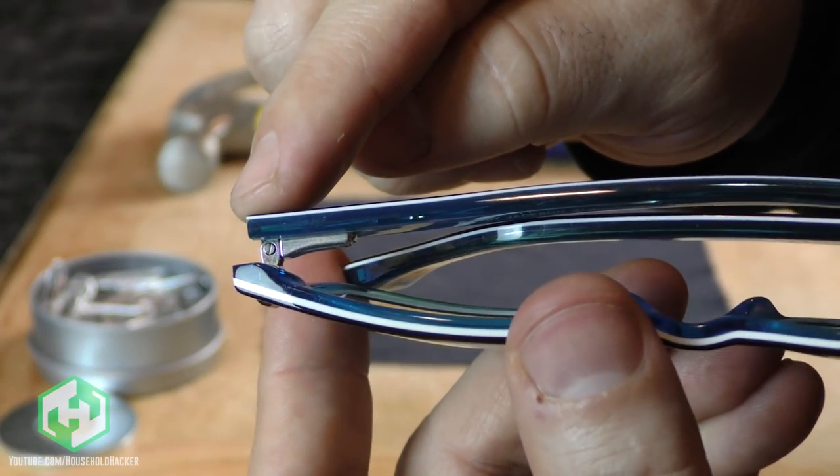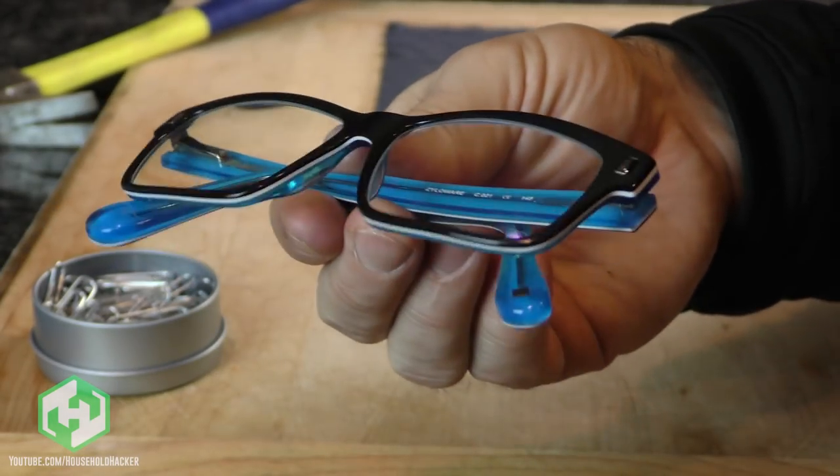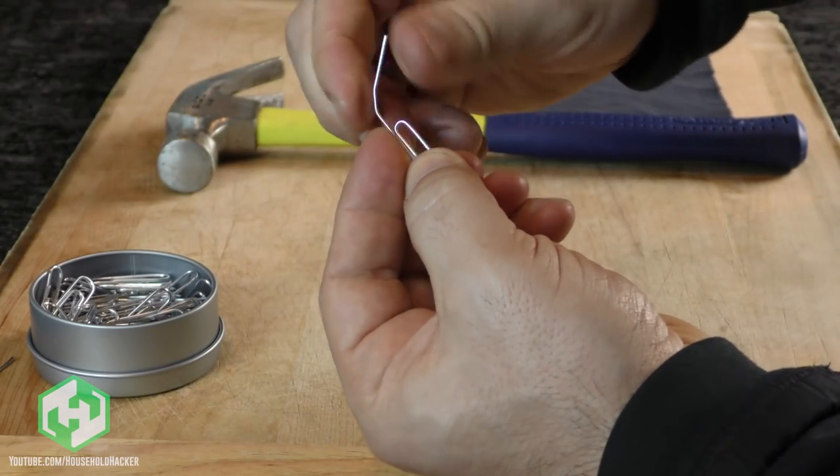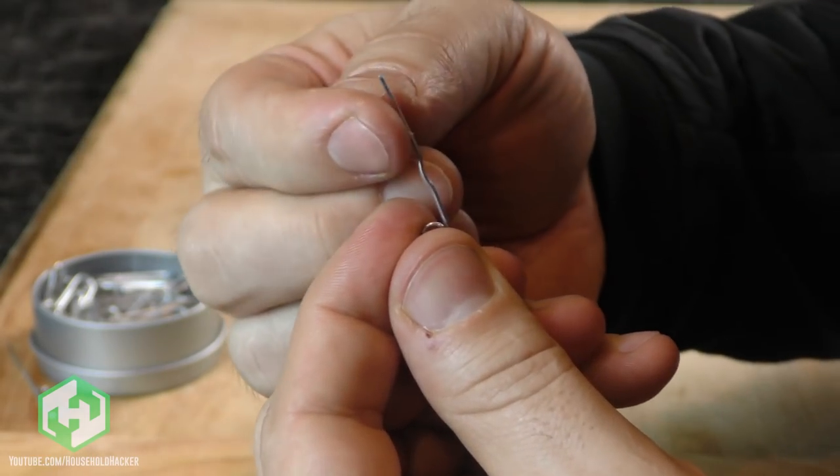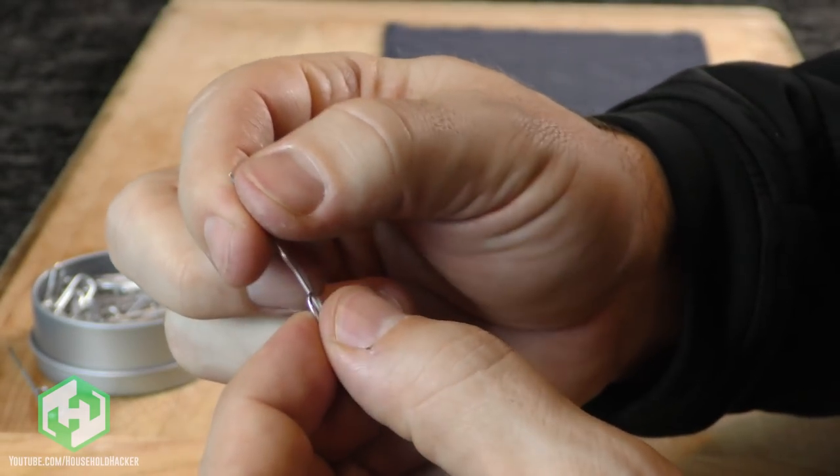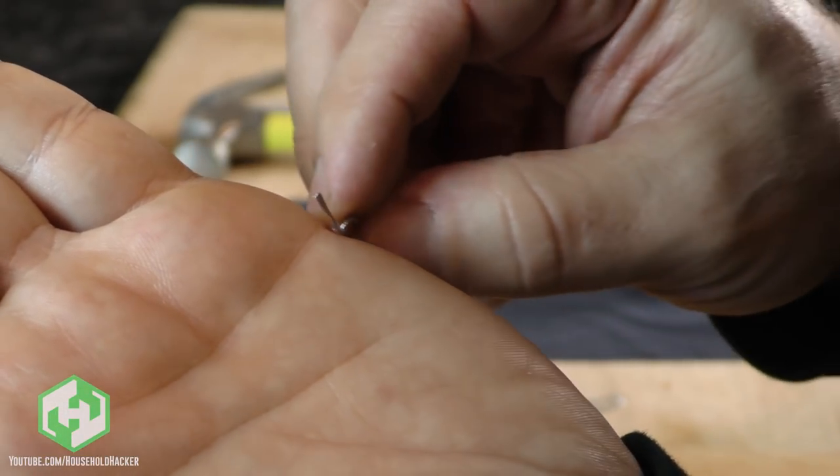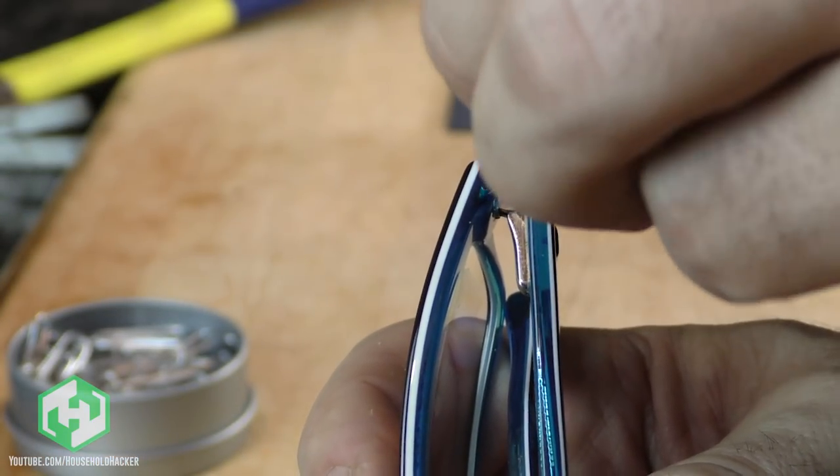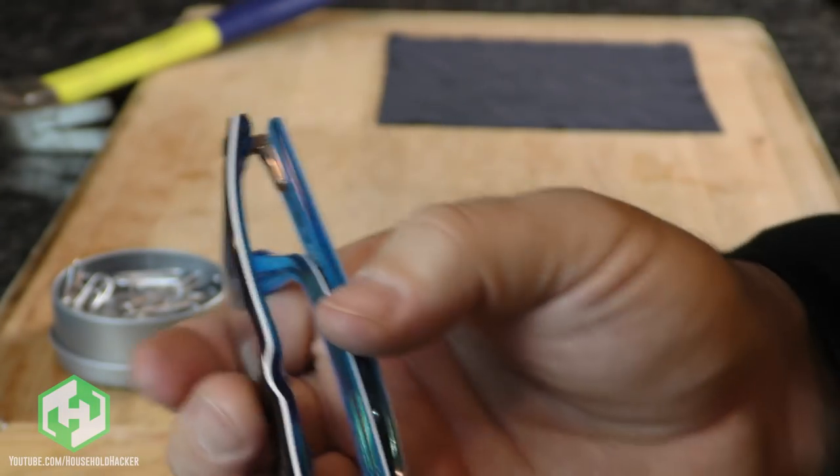If you ever need to work with tiny screws but can't find a small enough tool, don't worry. You've got paper clips standing by your side. Just grab a clip and a hammer. Straighten out the open end and use your hammer to flatten it out. You may need to remove the outer plastic covering. It'll probably take a dozen or so whacks before it flattens out and you can use a file to square off those ends, but it's that simple. Now you have a micro screwdriver that'll help you conquer those ridiculously small screws and it's especially handy when repairing eyeglasses.